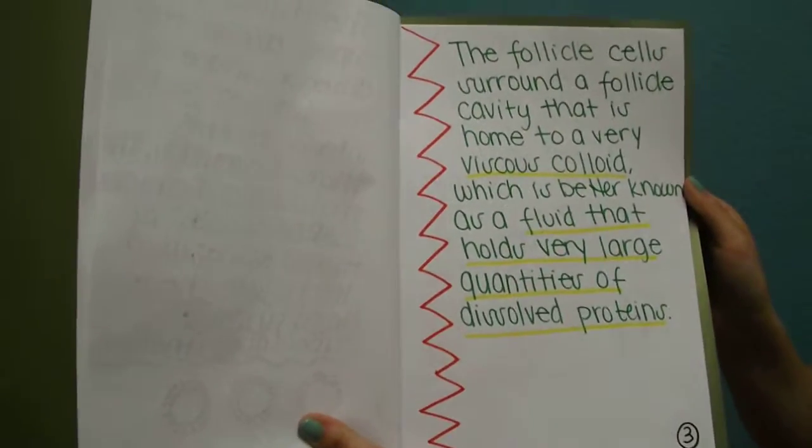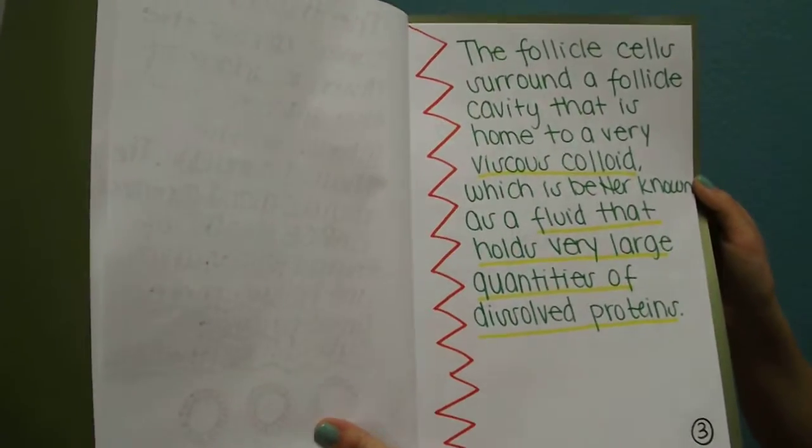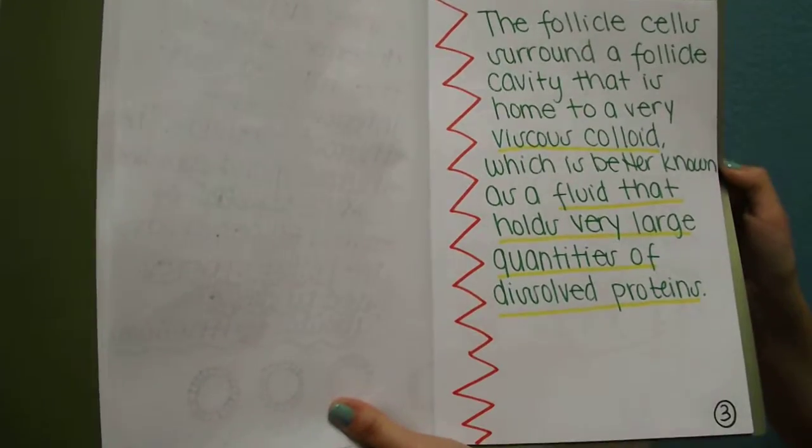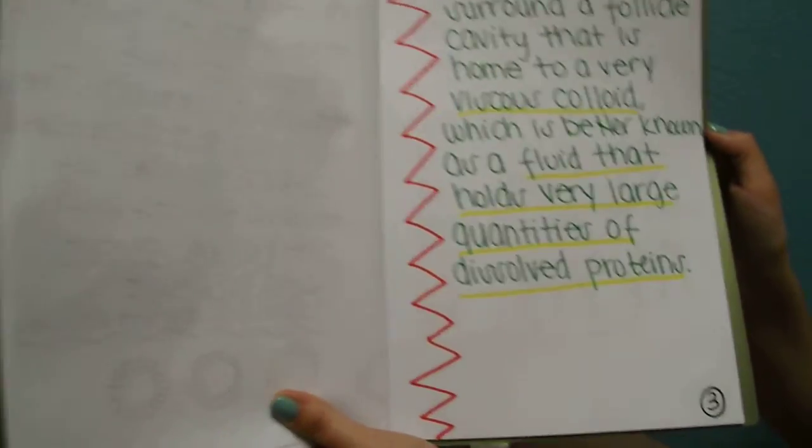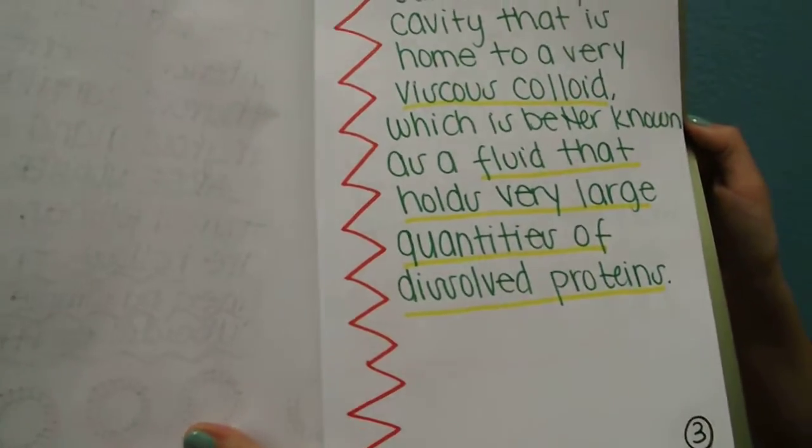The follicle cells surround a follicle cavity that is home to a very viscous colloid, which is better known as a fluid that holds very large quantities of dissolved proteins.